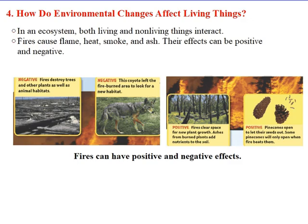How do environmental changes affect living things? In an ecosystem, both living and non-living things interact. Fires, for example, cause flame, heat, smoke, and ash. Their effects can be positive and negative on the environment. One of the negative effects of fires is that they can destroy trees, other plants, and animal habitats. One of the positive effects is that they clear space for new plant growth.